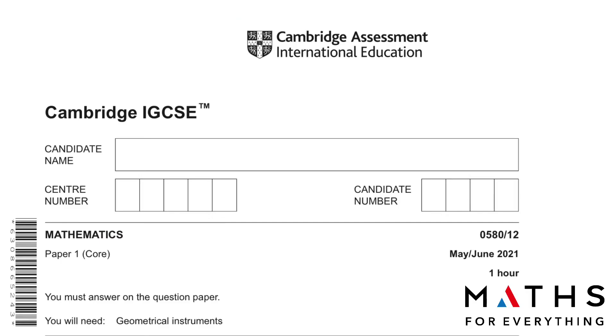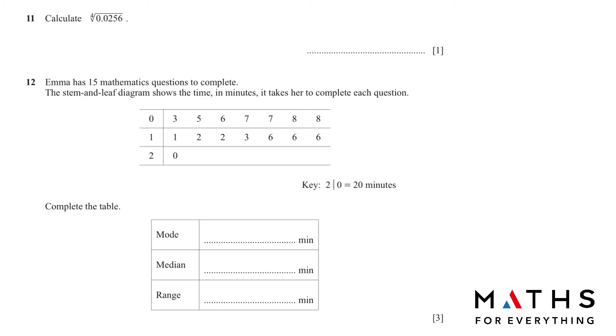Assalamu alaikum, welcome to my channel. Today we are going to solve Cambridge IGCSE Mathematics Paper 1 Core Variant 1, May June 2021, question number 11 onwards. But before we start, subscribe to my channel and don't forget to like the video if I've helped you. Share it with your friends. Let's start.